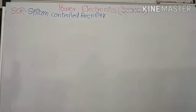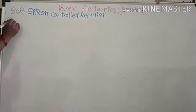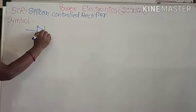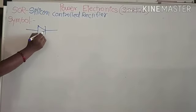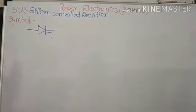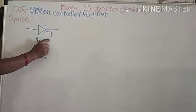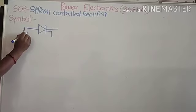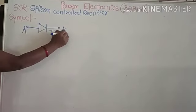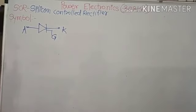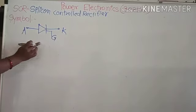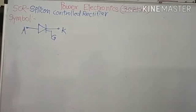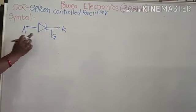We will start from the symbol of SCR. I will draw this symbol. SCR symbol is similar to a diode but the one difference is that there is an additional terminal called the gate terminal. This symbol has three terminals: first is anode, second is cathode, and third one is gate. The anode corresponds to the P region, the cathode corresponds to the N region, and the gate pulse is used for triggering purpose.